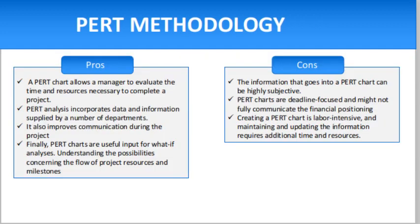A PERT chart is similar to a critical path analysis, another method that project managers use to chart tasks in a project. The main difference between the two is that a PERT chart uses various time frames and probability terms when estimating each project stage.